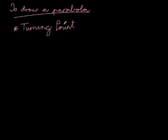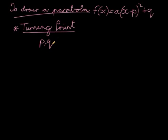The turning point is actually quite easy. If we have the original format, let's say we have y or f(x) equal to a(x minus p) squared plus q. If we have that format, then the turning point is given by (p, q), where p is the symmetry line.